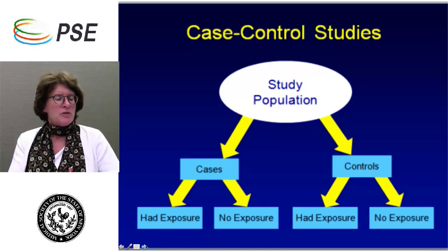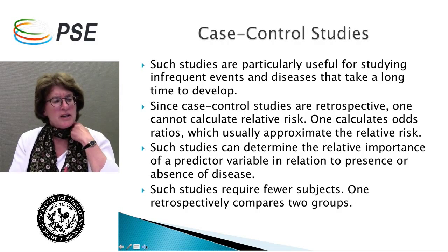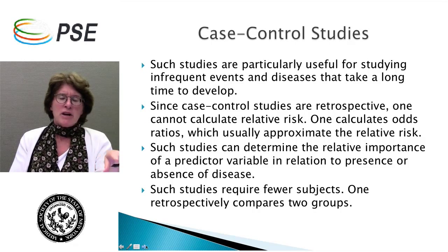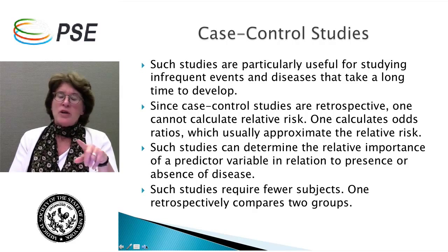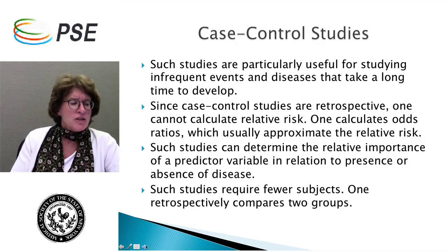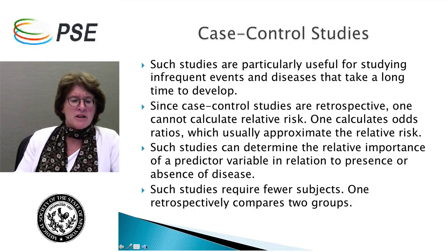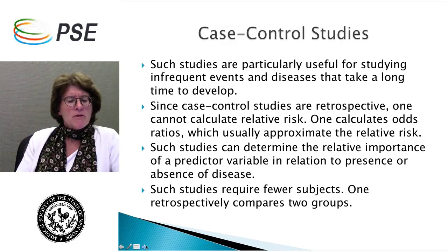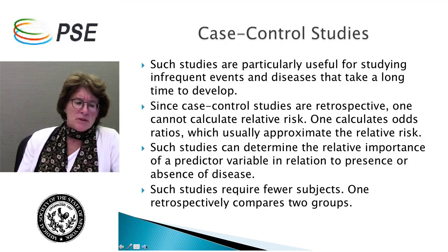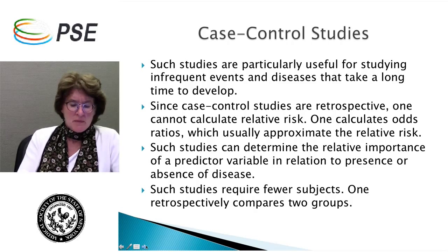Case-control studies are more difficult to do in many respects, but they are useful for studying infrequent events and diseases that take a long time to develop. You would never do a cohort study on a rare disease or one that takes a long time to develop, but you can with a case-control study. You cannot calculate the relative risk — relative risk is based on incidence — but you can calculate the odds ratio, which approximates the relative risk. Here we're looking at the relative importance of a predictor variable in relation to the presence or absence of disease. We know who's sick. In a cohort study we don't, but in a case-control study we do.